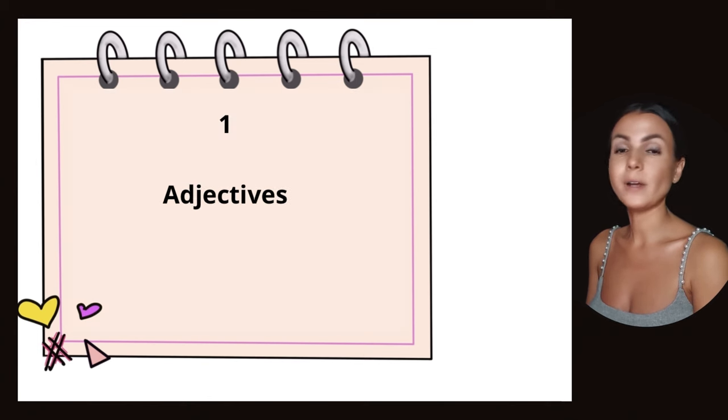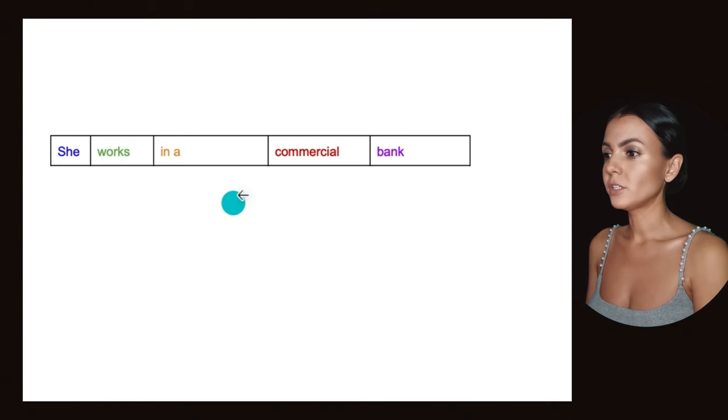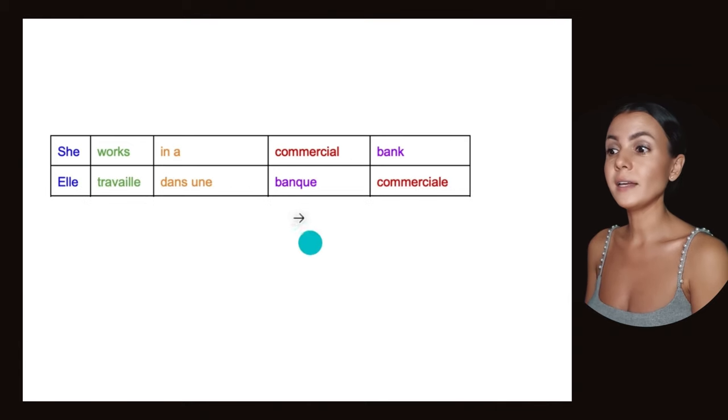Let's start with the first one: adjectives. She works in a commercial bank. In English we put our adjective before. In French we put it after: Elle travaille dans une banque commerciale. It goes after - commerciale.